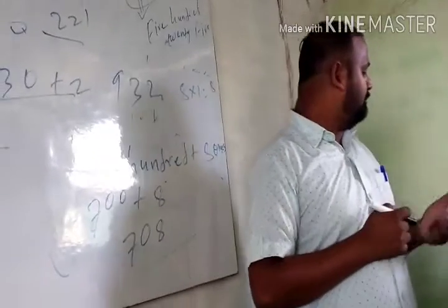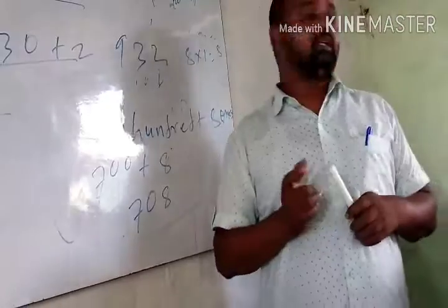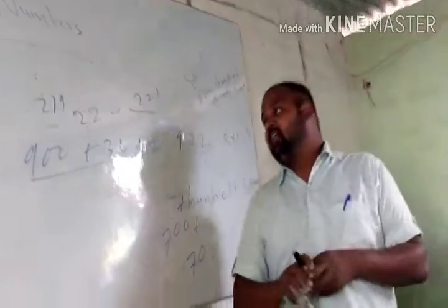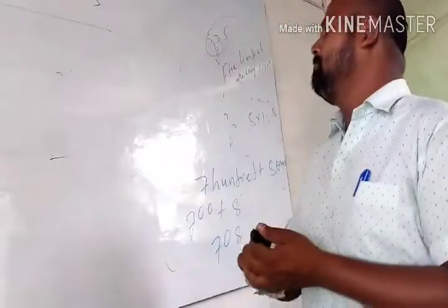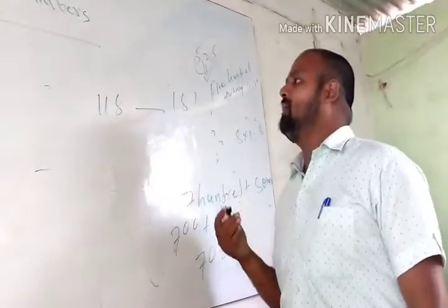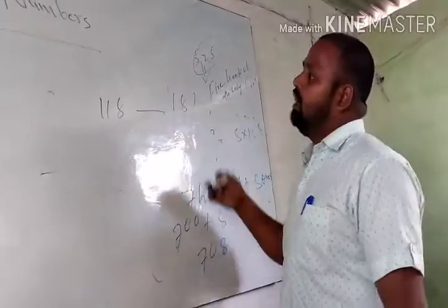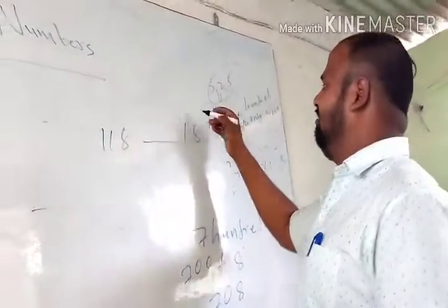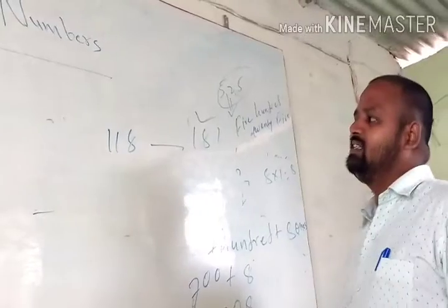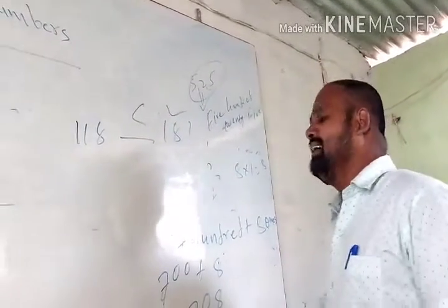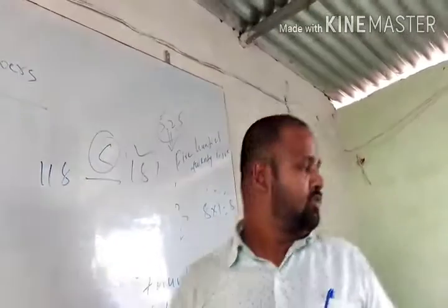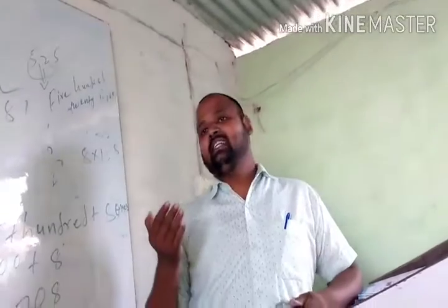Now we will show you some numbers and you have to identify which is greater. You can easily identify the greater number — for example, 181 is the greater number. We will use the greater-than symbol to indicate this.